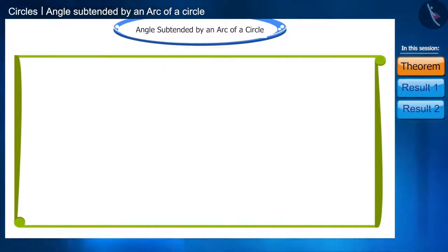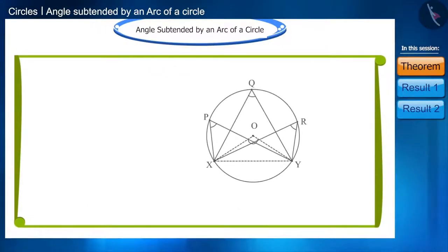Let's go ahead, observe this figure. What can you say about these angles? All these angles—angle XBY, angle XQY, angle XRY—are the angles subtended by the same arc XY at different points in the remainder of the circle.